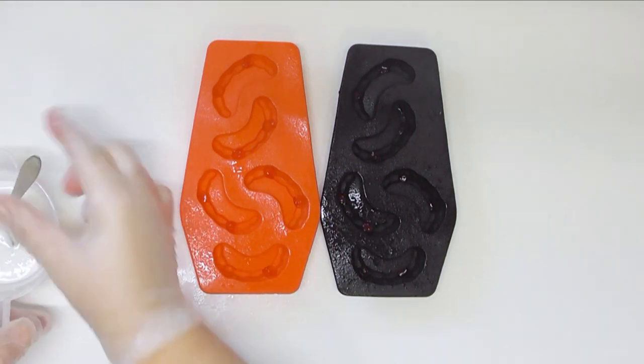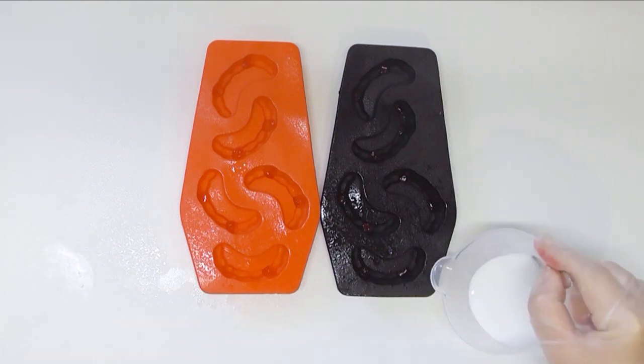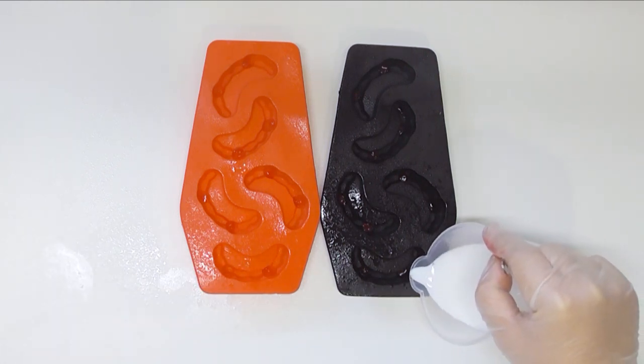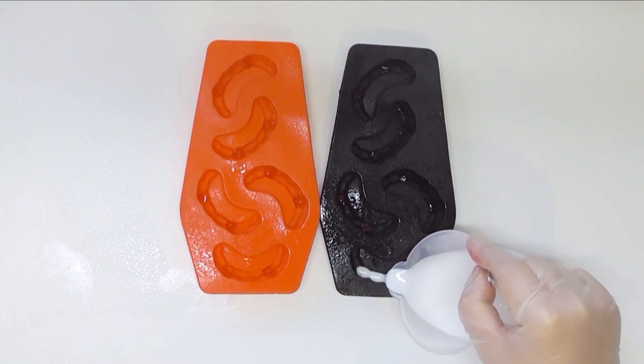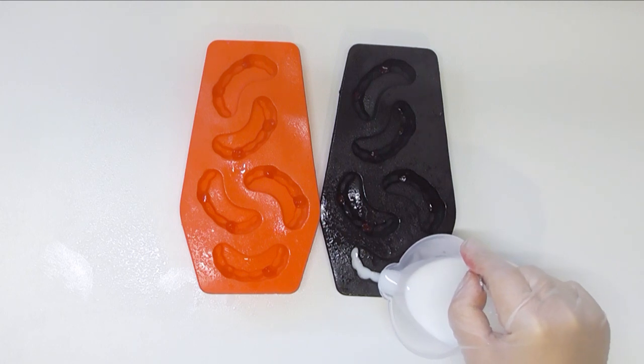All I'm going to do is pour my white up to the gum line of these molds, so we're going to pour these in here and we are going to hopefully make a really good looking set of teeth for this next soap.